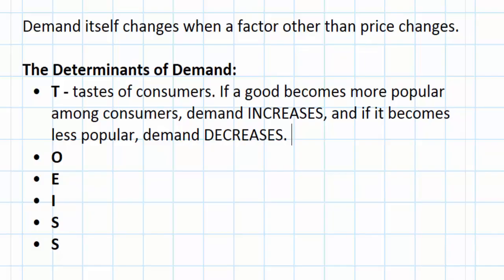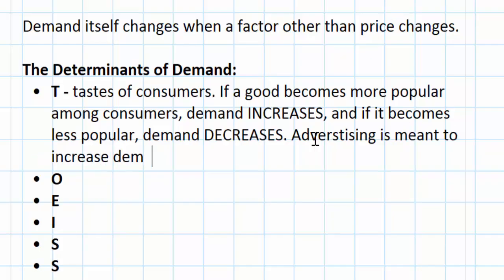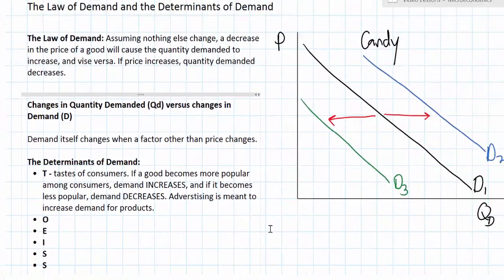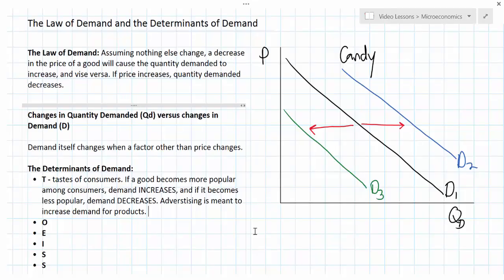One way that demand for candy can increase because of a change in tastes is if the flavors become better — actually better quality candy — or if there's better marketing or advertising by candy firms that appeals to young people, so they demand more candy at every price. The main purpose of advertising is to increase demand for products. Advertising makes products more appealing to consumers and causes demand to increase, meaning more sales at every price. Businesses can sell more of their output without having to lower prices if they can increase demand through advertising.